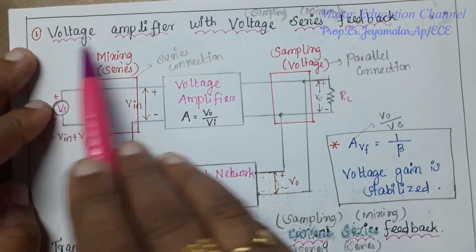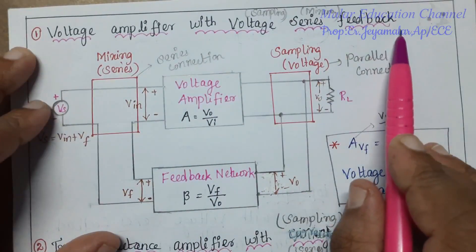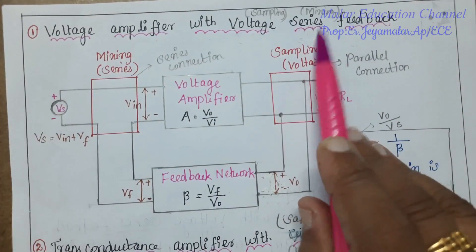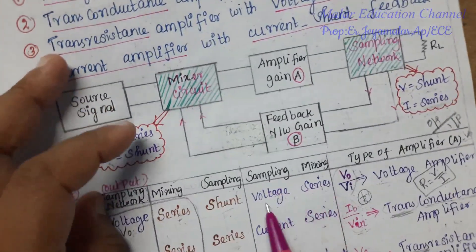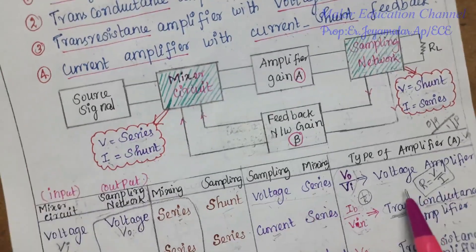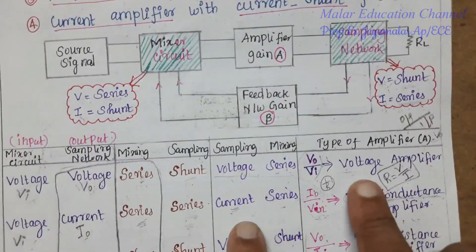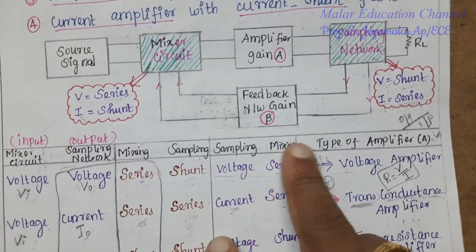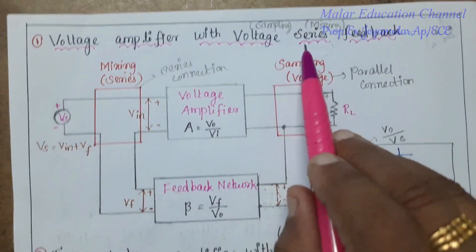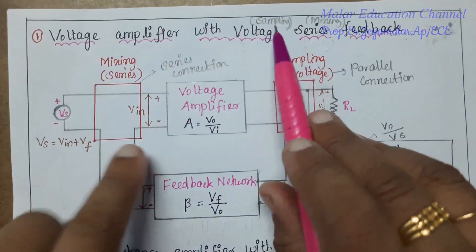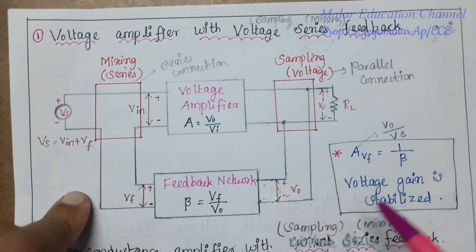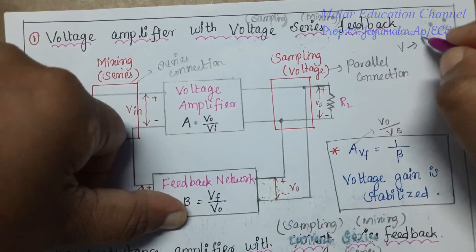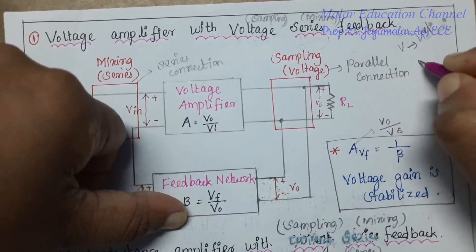First type: voltage amplifier with voltage series feedback. Voltage series means sampling is voltage and mixing is series. Sampling means output section, mixing means input section. Keep in mind: voltage means parallel (shunt) connection, and current means series connection.